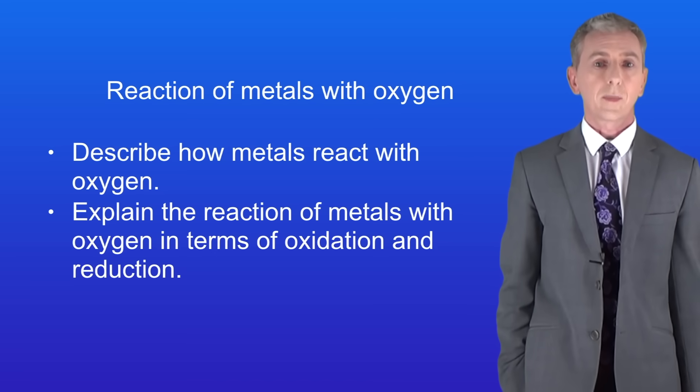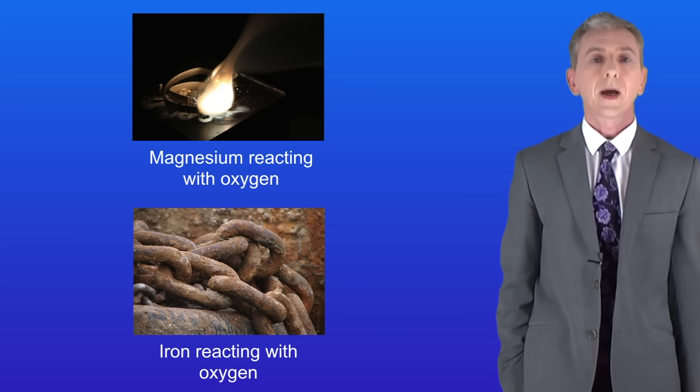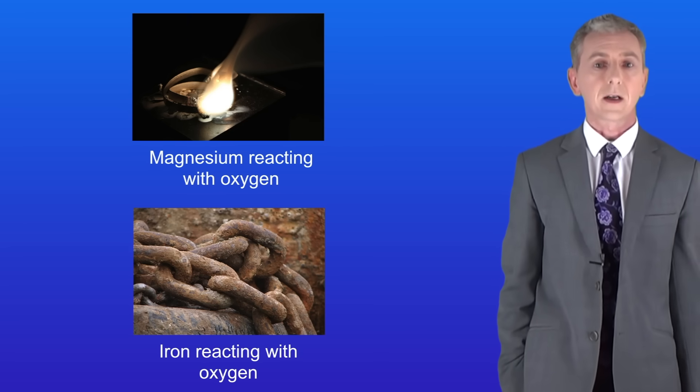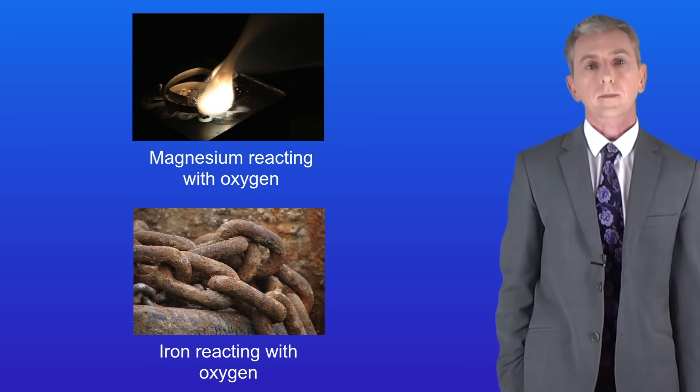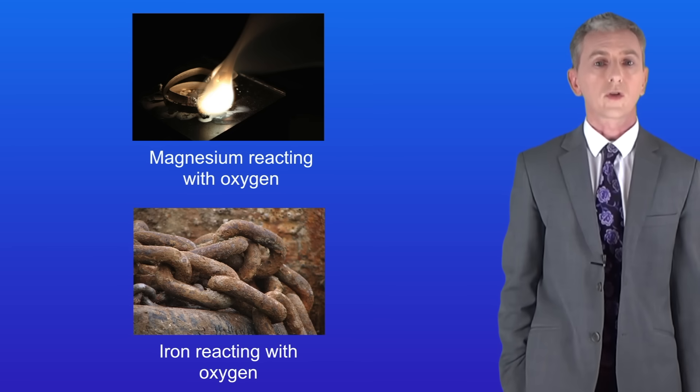We can find lots of examples of metals reacting with oxygen and I'm showing you two of these here. Magnesium reacts with oxygen rapidly, releasing a great deal of heat and light. This is a very vigorous reaction. Iron reacts more slowly with oxygen, taking weeks or months to react.